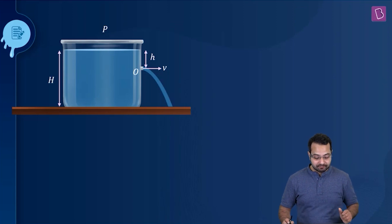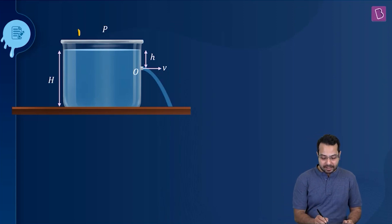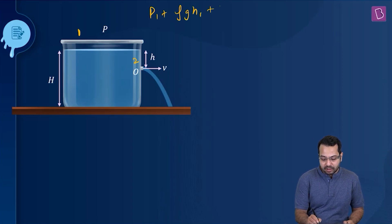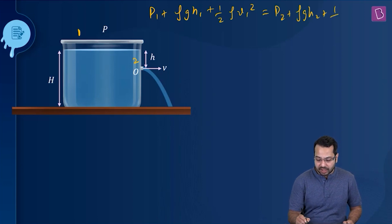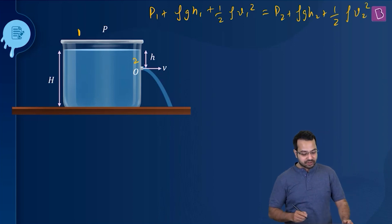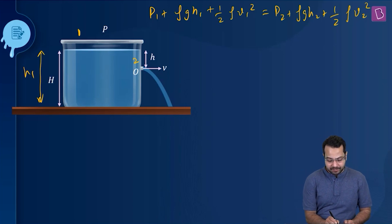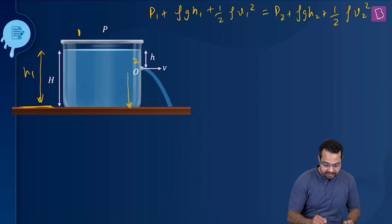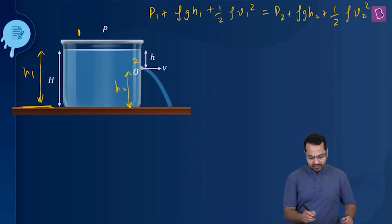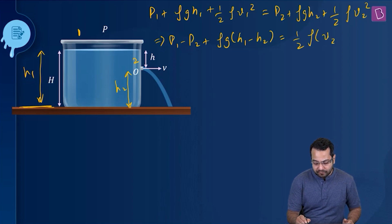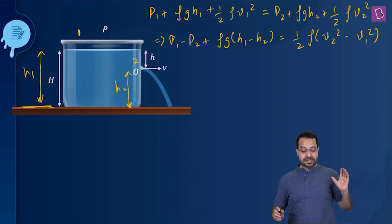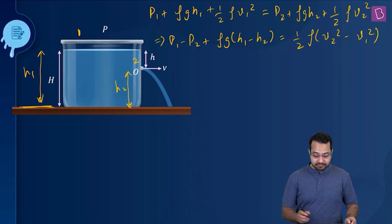I am calling the free surface point one and the hole point two. Bernoulli's equation tells me that P1 plus ρgH1 plus half ρV1² equals P2 plus ρgH2 plus half ρV2². Rearranging, we get P1 minus P2 plus ρg(H1 minus H2) equals half ρ(V2² minus V1²). There are two very important assumptions we take here.